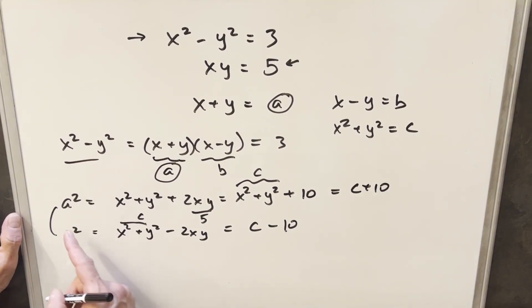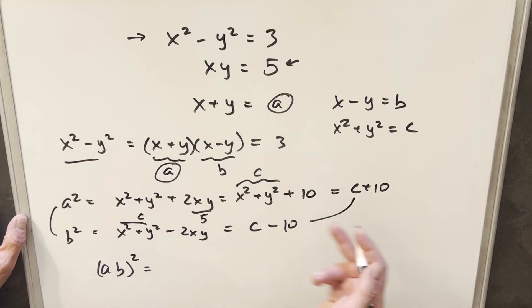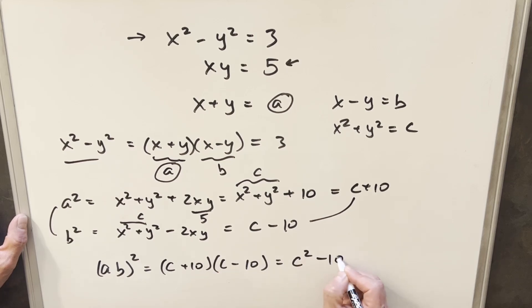Well, if I take these two expressions and multiply them together, we're going to have a squared times b squared, or I can write this as ab all squared. And knowing that these are equal to c plus 10 and c minus 10, I can multiply this together over here, c plus 10 times c minus 10. And this is going to give me c squared minus 100.